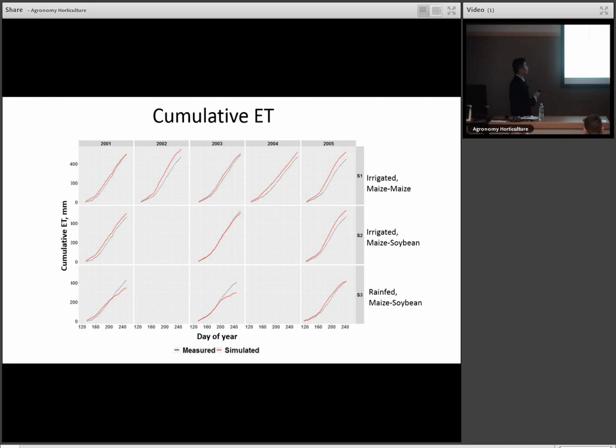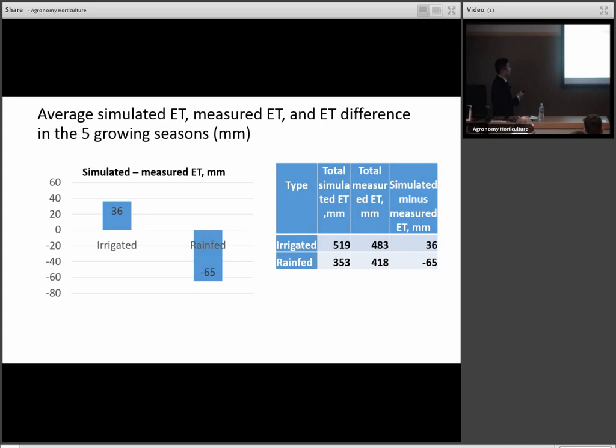If you look at all the irrigation sites, we basically overestimate slightly - some larger, some smaller - but basically overestimate all the measured accumulated ET. For the rainfed side, however, we underestimate ET. By the way, the ET is from eddy covariance, those weather station tower measurements. So the measured ET is actually measured, and the red one is hybrid-maize simulated. In summary for the ET part, for irrigated we overestimate ET by 36 millimeters, and for rainfed we underestimate ET by about 65 millimeters.